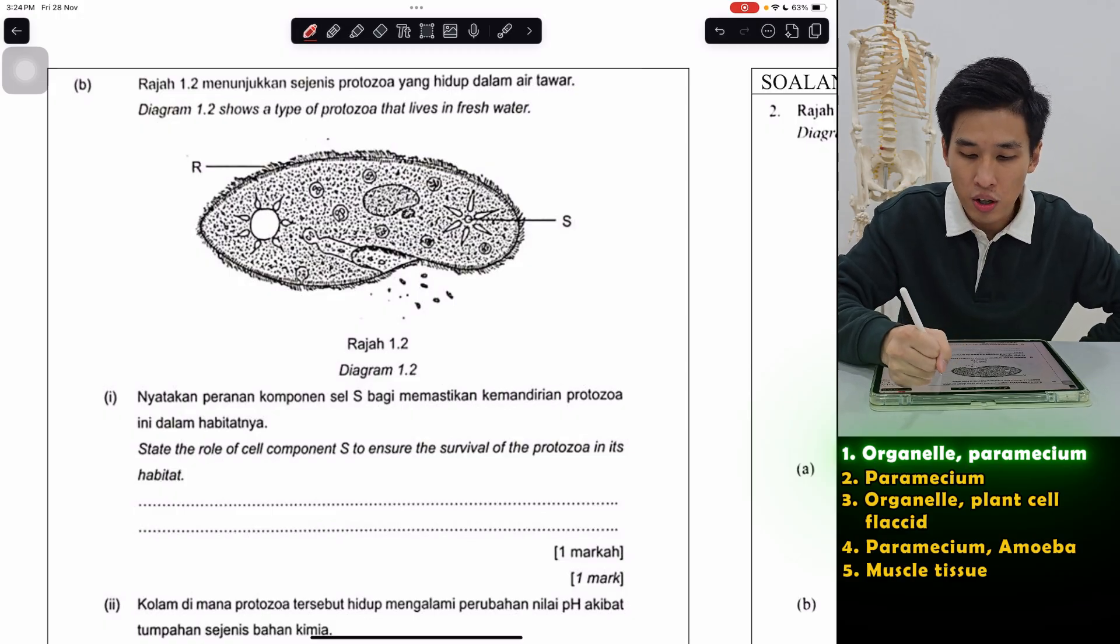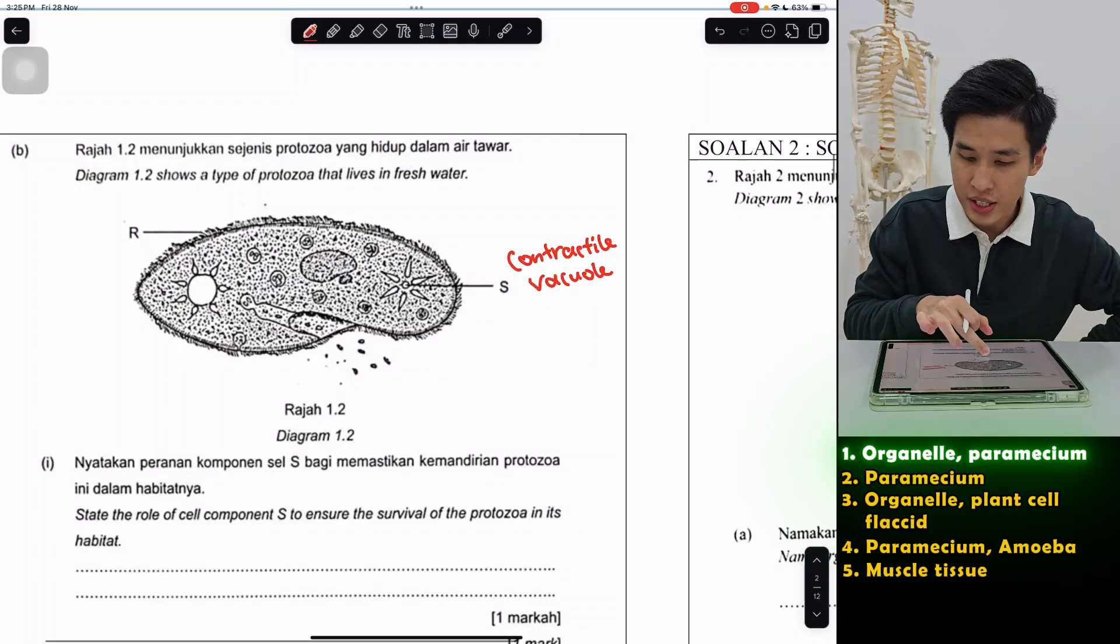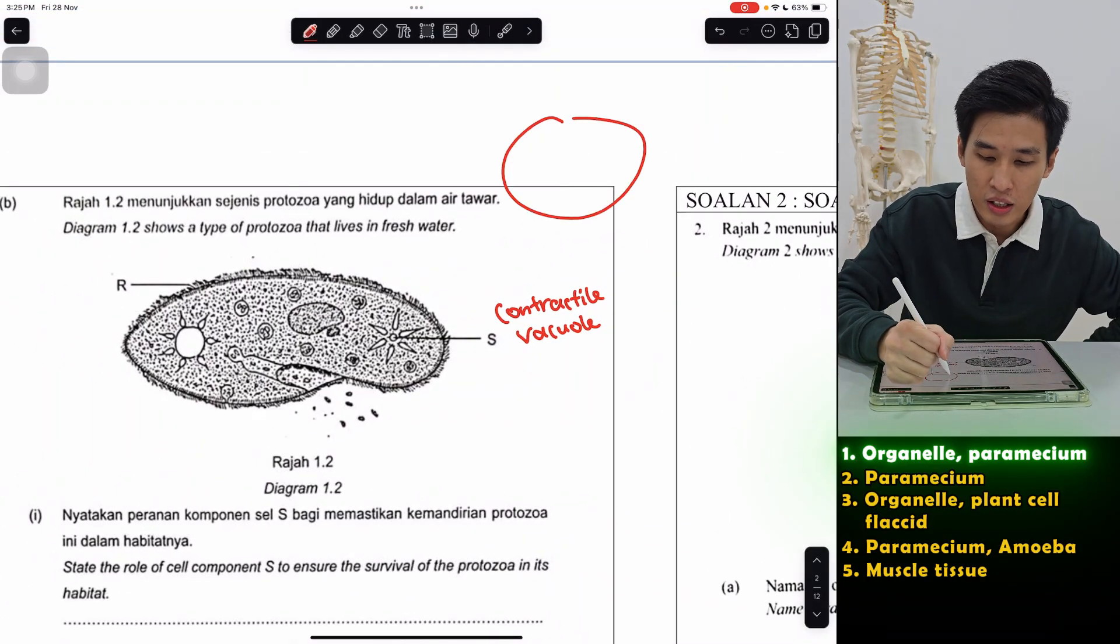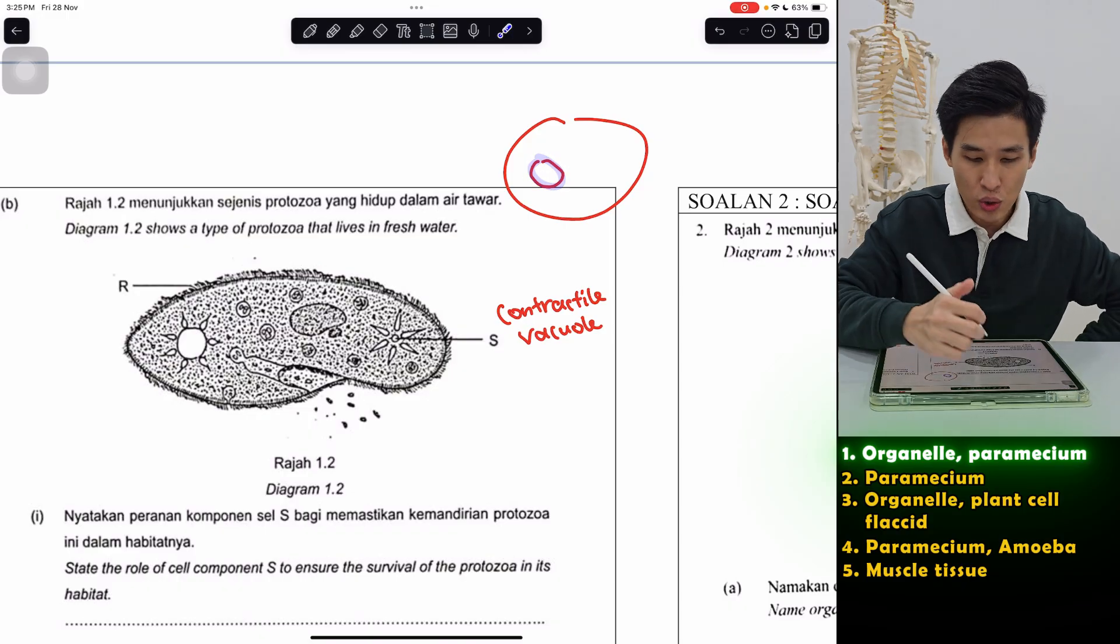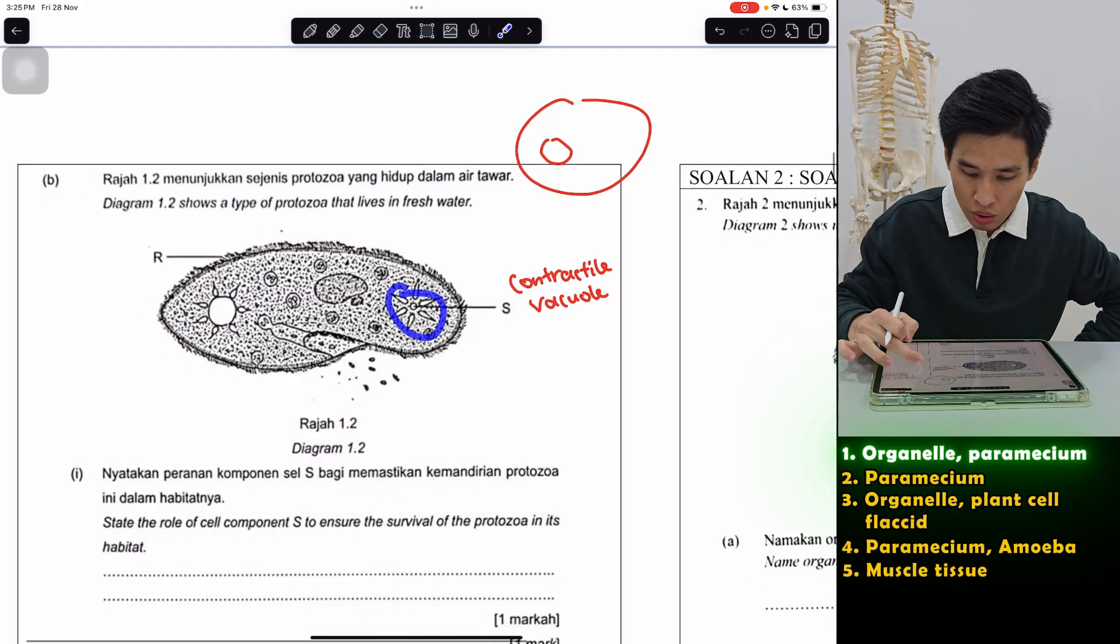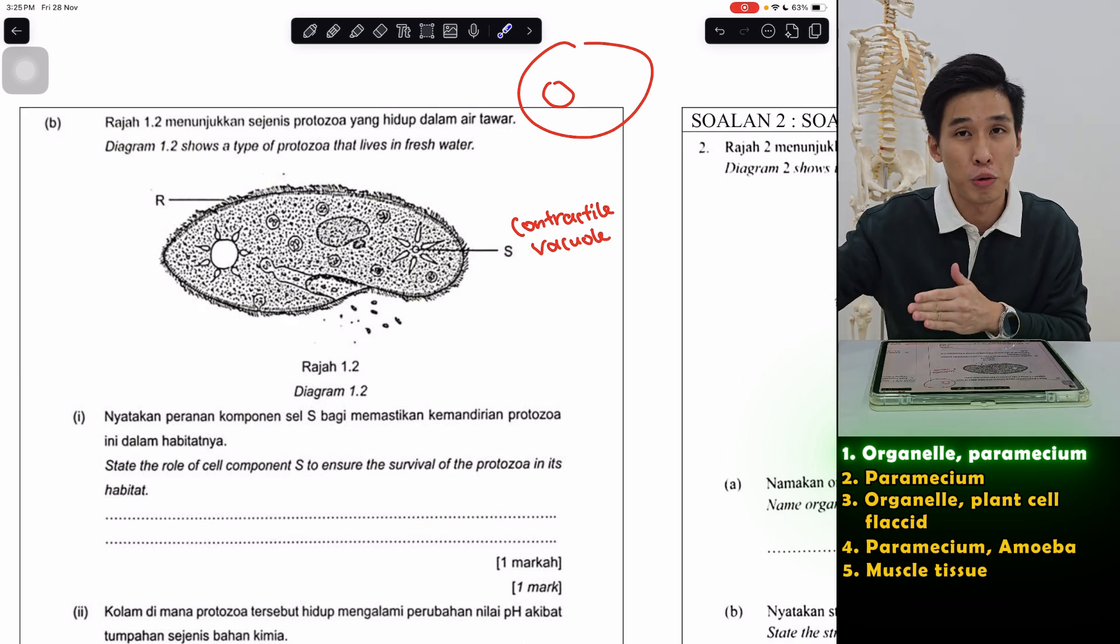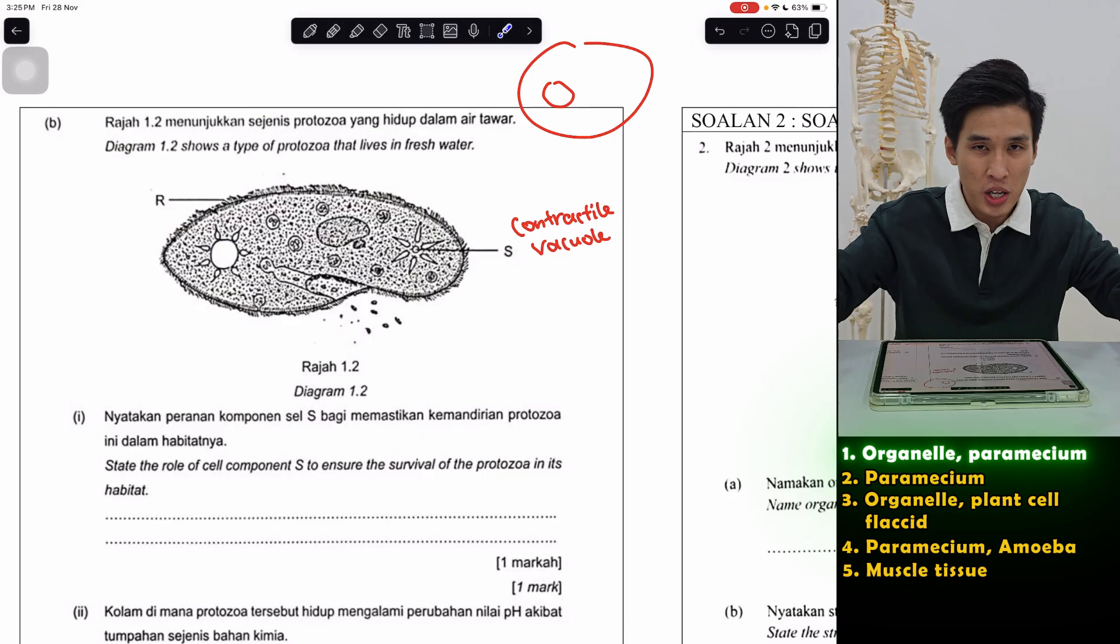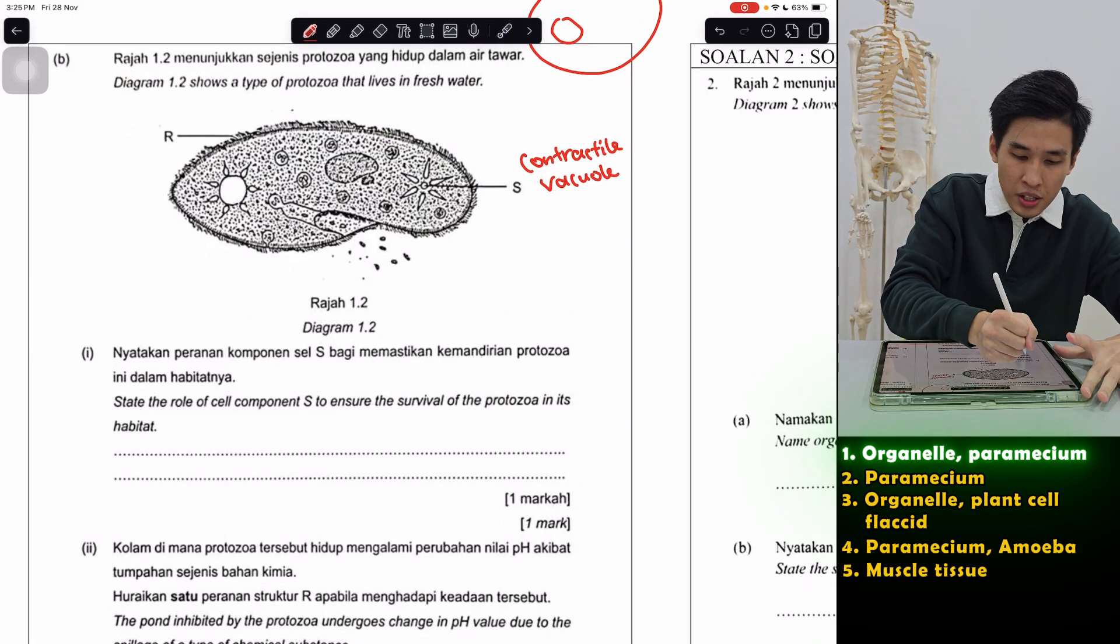They ask us to state the role of component S to ensure survival of the protozoa in its habitat. So paramecium is the type of protozoa. This star-shaped thing is called the contractile vacuole. In amoeba also got contractile vacuole, but in amoeba it's more like a transparent round structure. This one is like star-shaped. What does it do? It involves in osmoregulation. It means it regulates water. If there's too much water, they expelled it. Just like our kidney, our bladder like that.